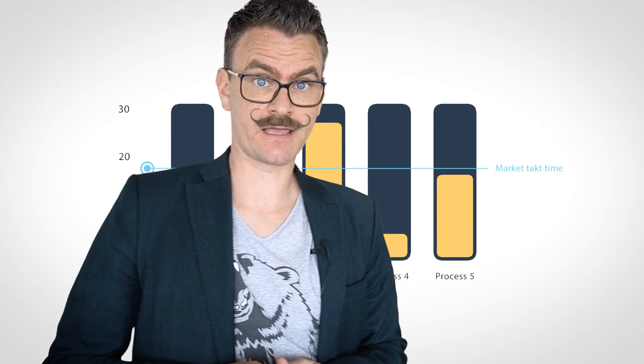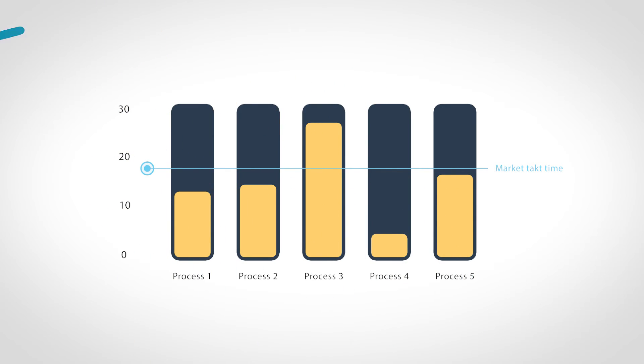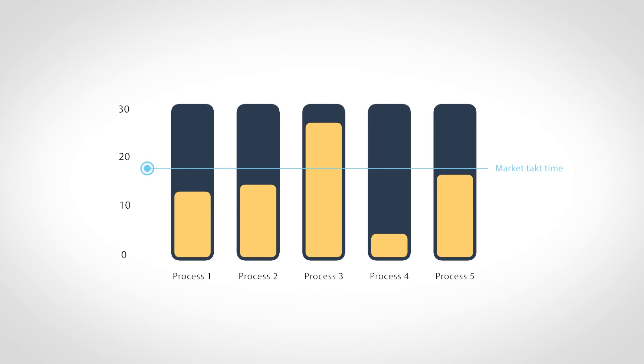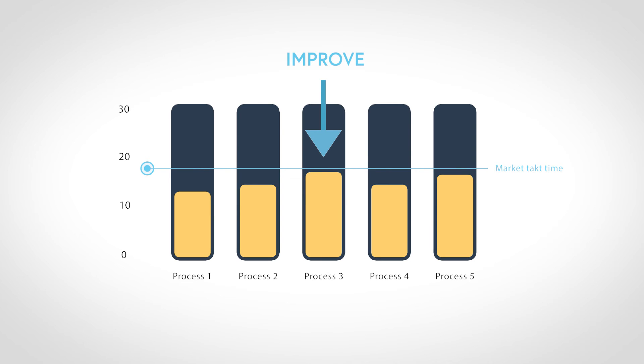So let's bring the concepts of bottlenecks and Takt time together. Consider this chart showing the market Takt time for a product and the process cycle times in a single-line factory. The process with the longest cycle time is constraining the total output of the line. In this factory, one should work to reduce the cycle time of process 3. Improving process 4 would be a waste of efforts. For example, one can move job tasks from process 3 to process 4, getting all process cycle times under the market Takt time. Ideally, this exercise should be continued until process cycle times are balanced.